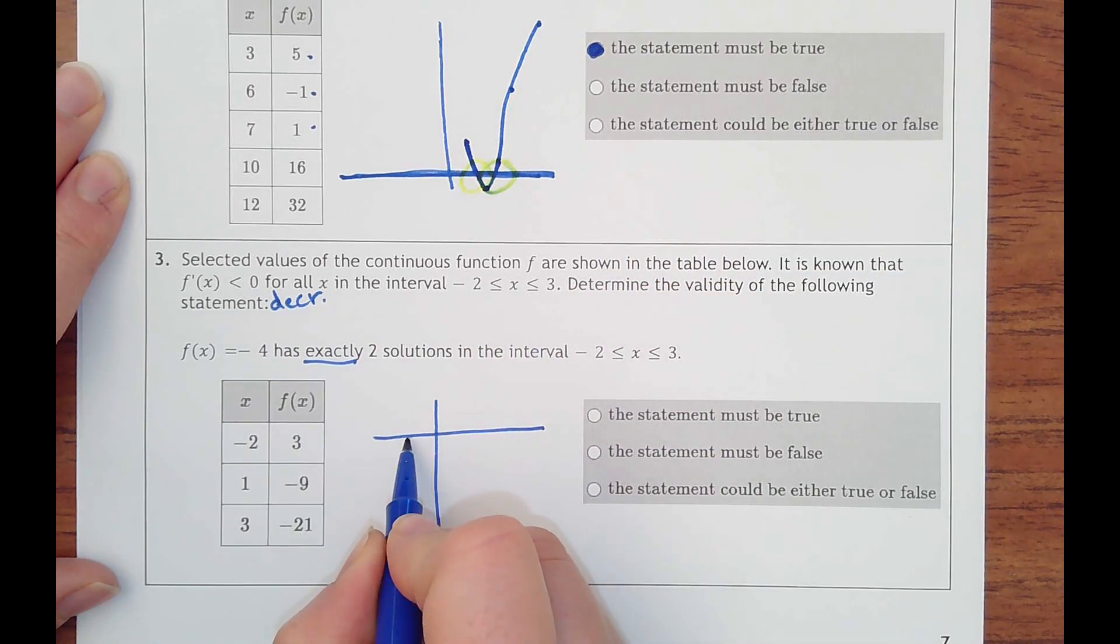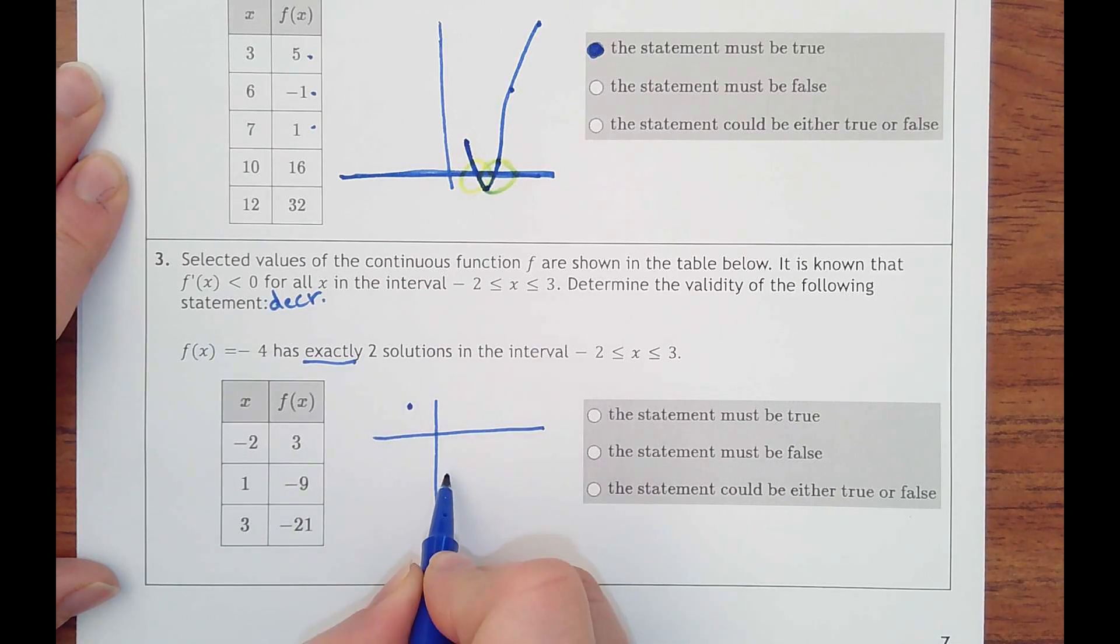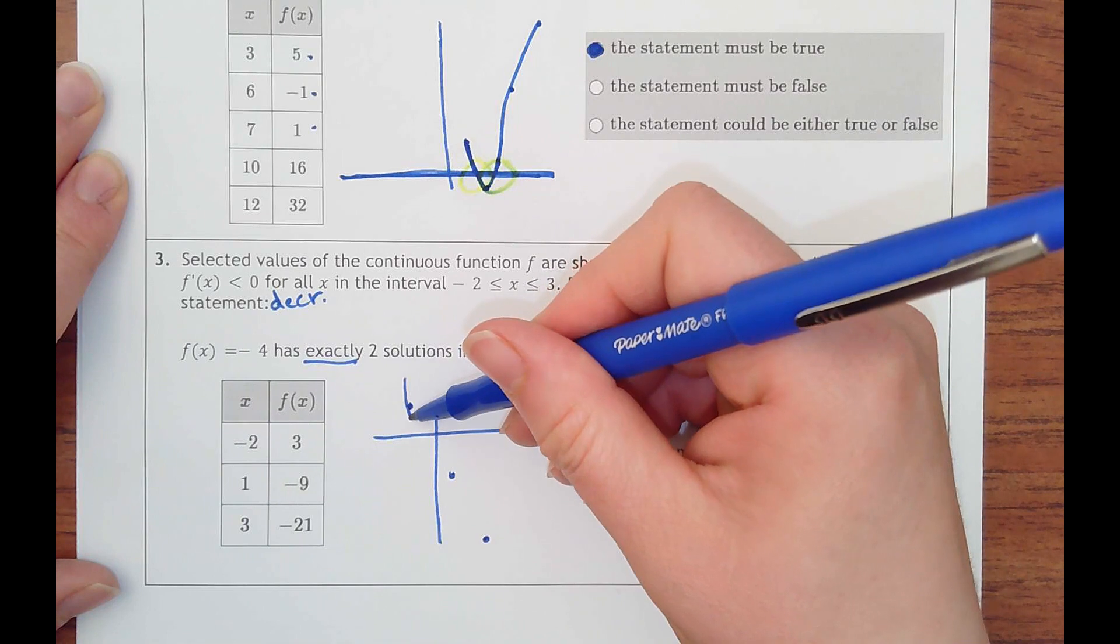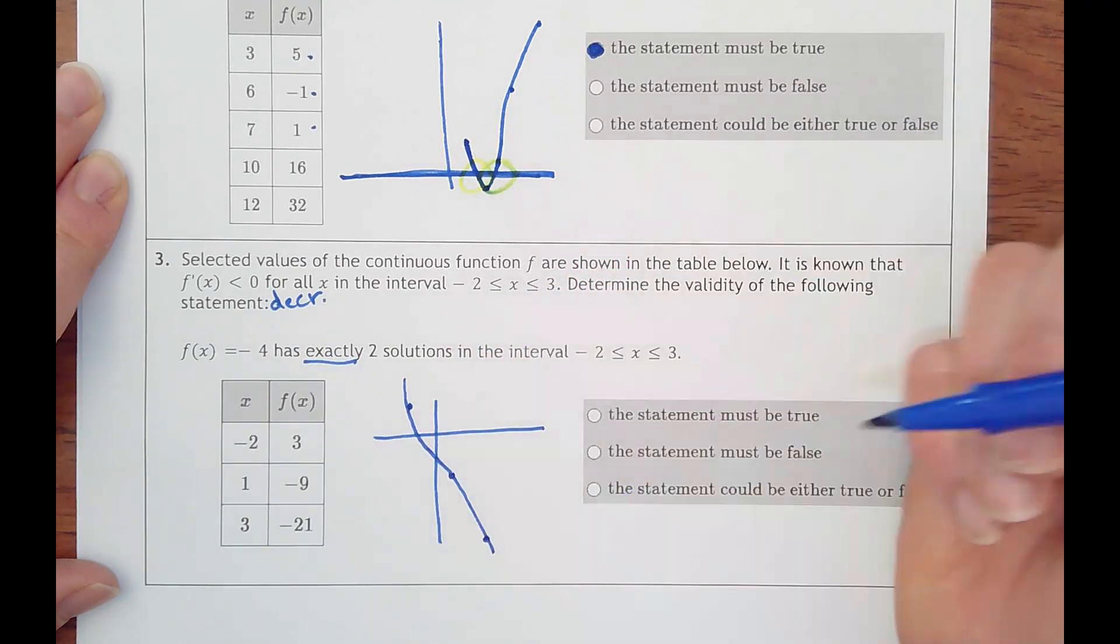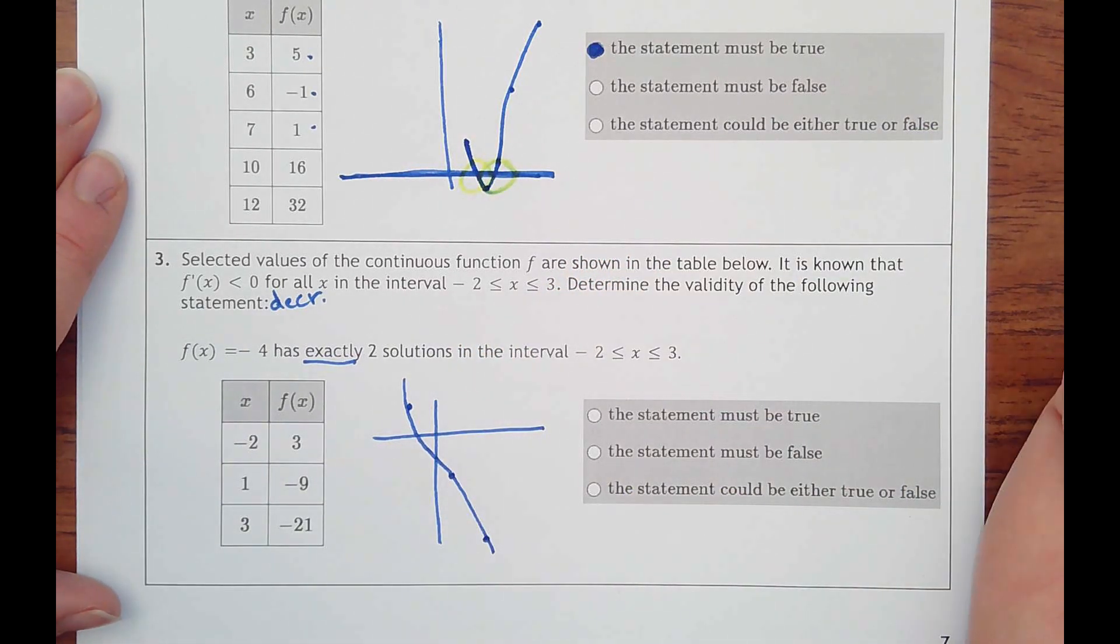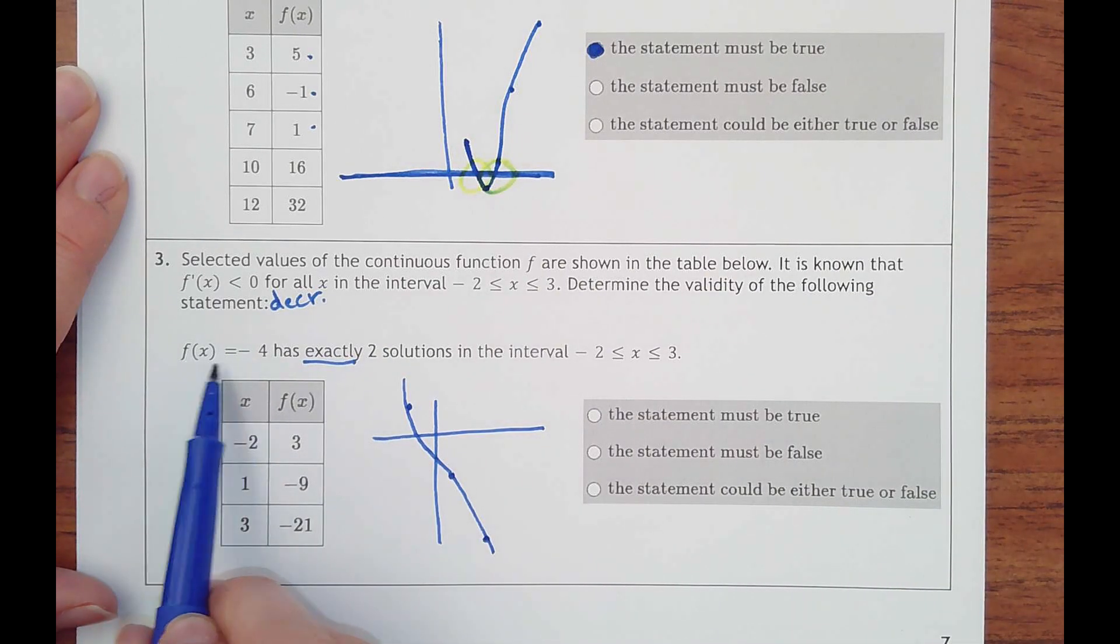So we got negative two, three, one negative nine, and three negative 21. Something like that behavior.